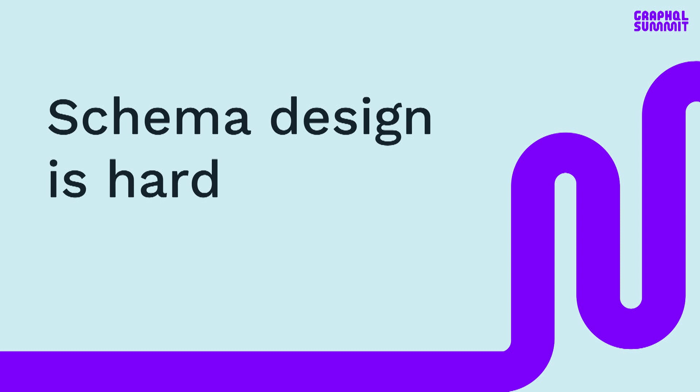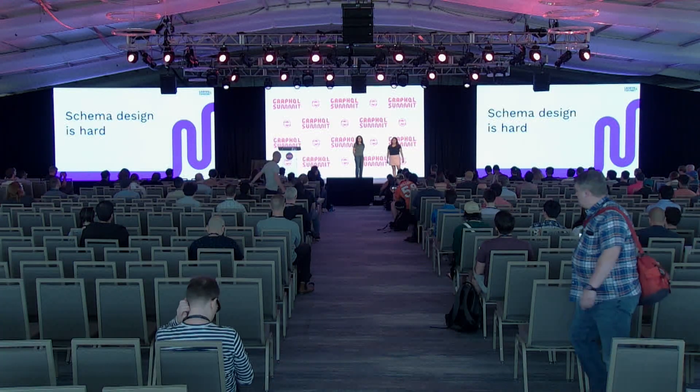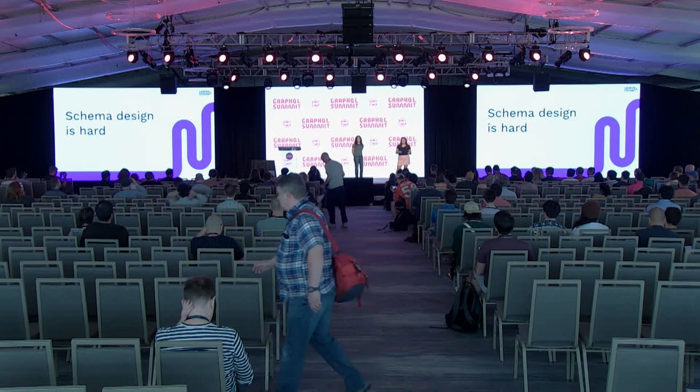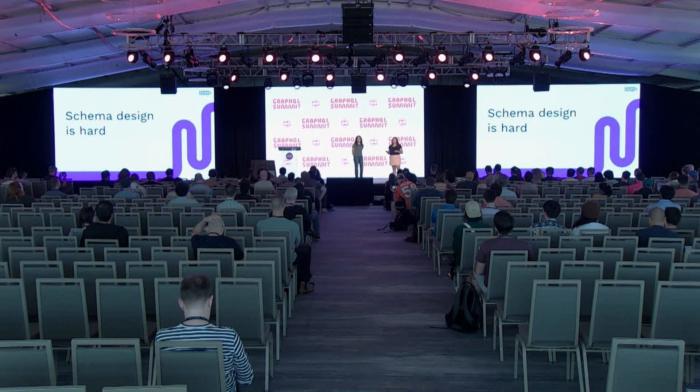Unfortunately, a lot of times we don't even realize a schema design flaw until we're too far committed. Oftentimes, that puts us in the position of a trade-off: do we fix the schema now, or do we keep going with a bad pattern because we have a feature to deliver? It would be great if we just never built a bad schema in the first place. Well, in our experience working in Gusto Pro, our app for accountants, Amanda and I had to learn some lessons the hard way.